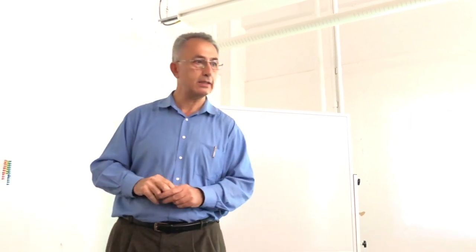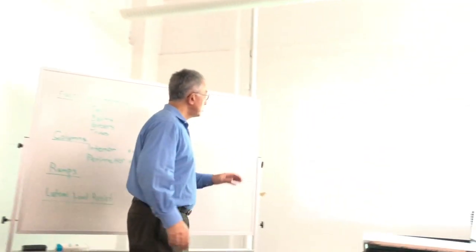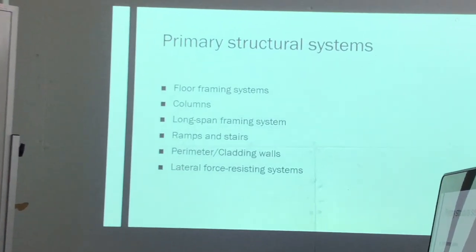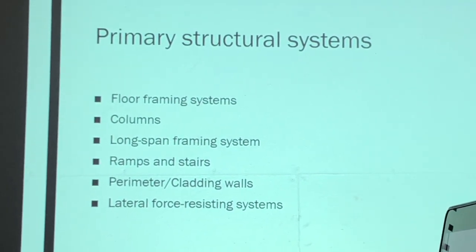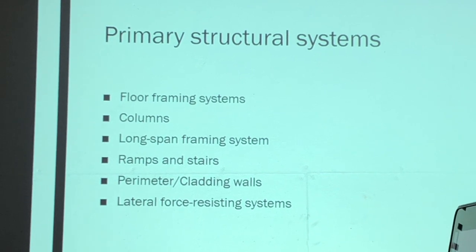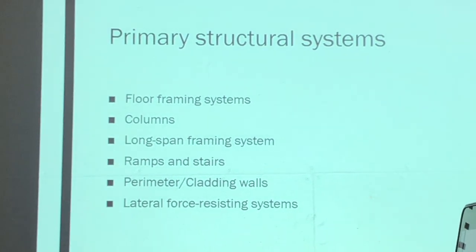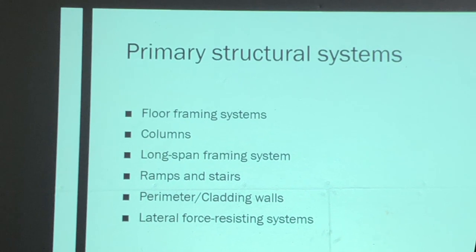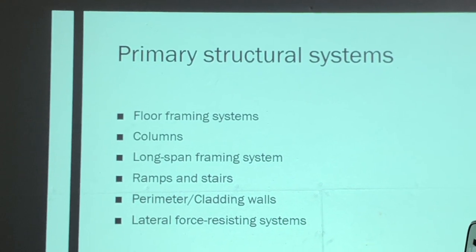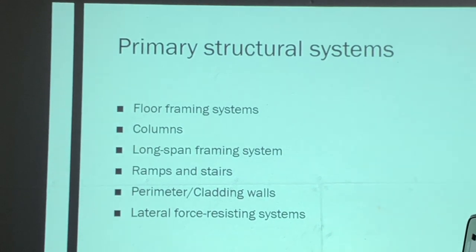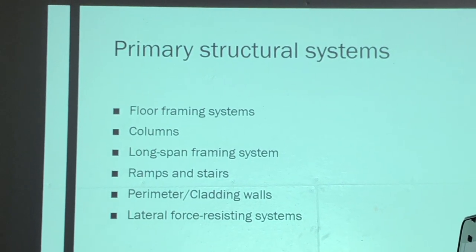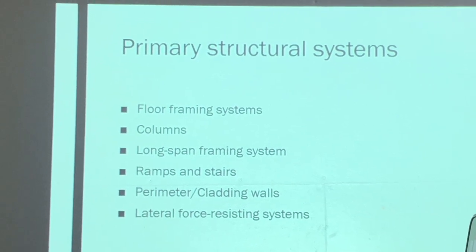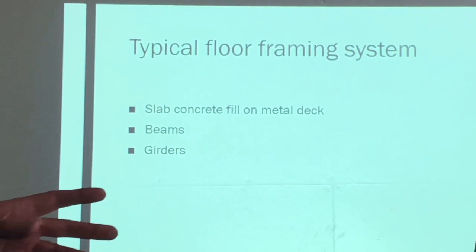The primary structural system has basically these elements: floor framing system — what is the sequence and placement of beams, girders, floor deck, and where do they go and what size they are — then columns, and sometimes long-span systems like trusses. We'll also touch on ramps, stairs, perimeter cladding walls, and lateral force resisting systems. Today we'll limit our conversation to the steel typical floor framing system.